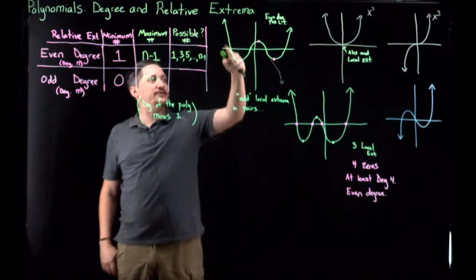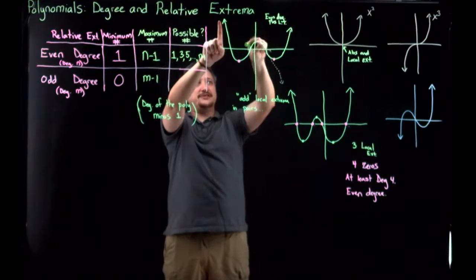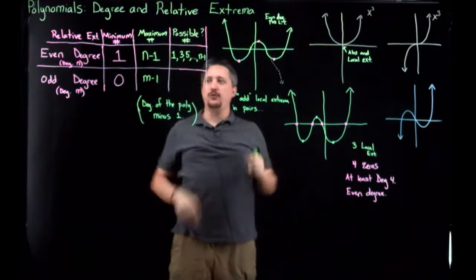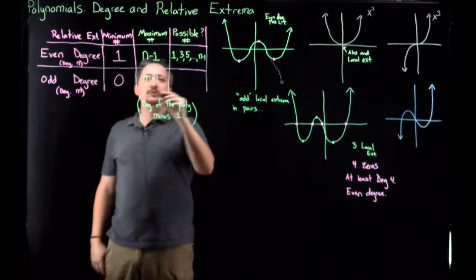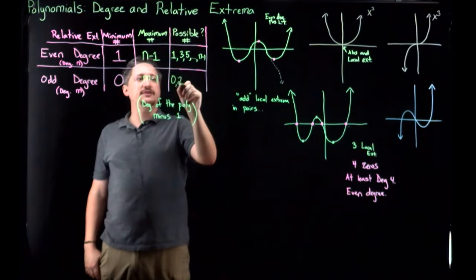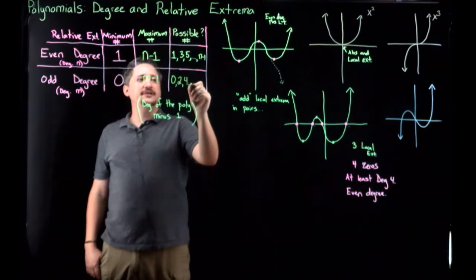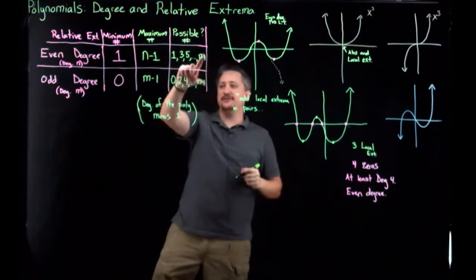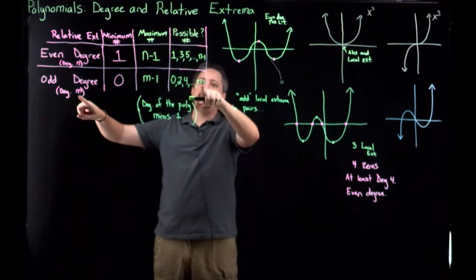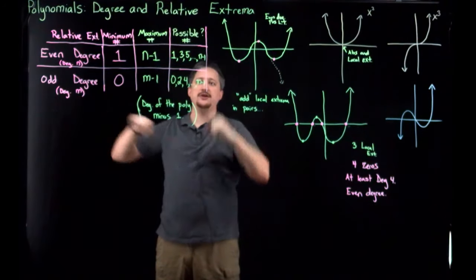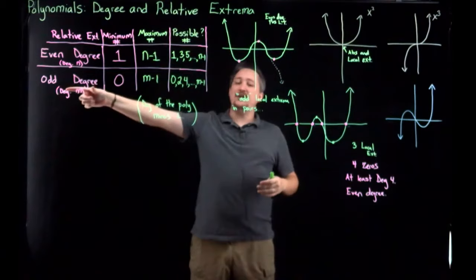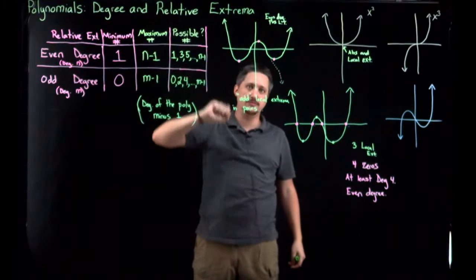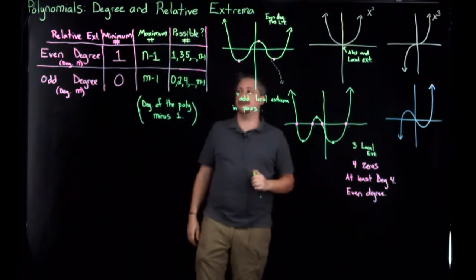The same idea applies for odd degree. If I only had one, the ends would be going in the same direction — but for odd degree they're supposed to go in opposite directions — so I can't have just one, I'd have to have two. And I can't have three, so then I'd have four. You have to add them in pairs. For odd degree m, you start at zero and add 2 at a time: so possible counts are 0, 2, 4, up to m minus 1. Since m is odd, m minus 1 is even. So odd degree polynomials always have an even number of relative extrema — the opposite of the degree.